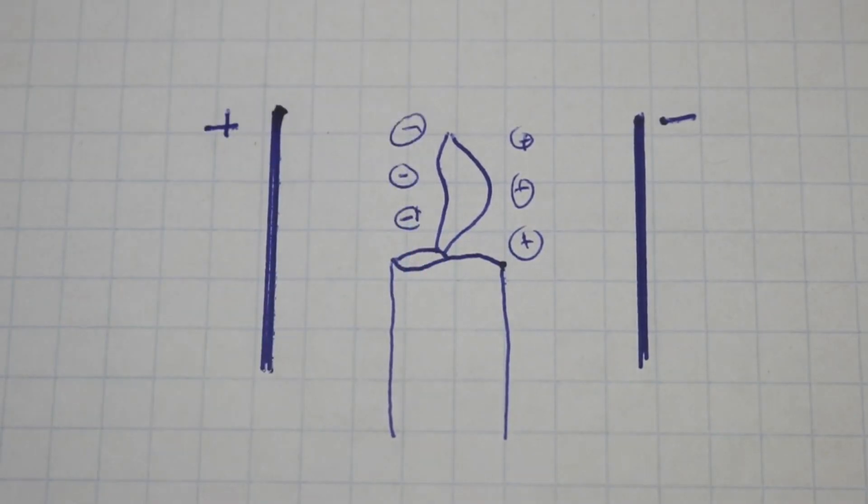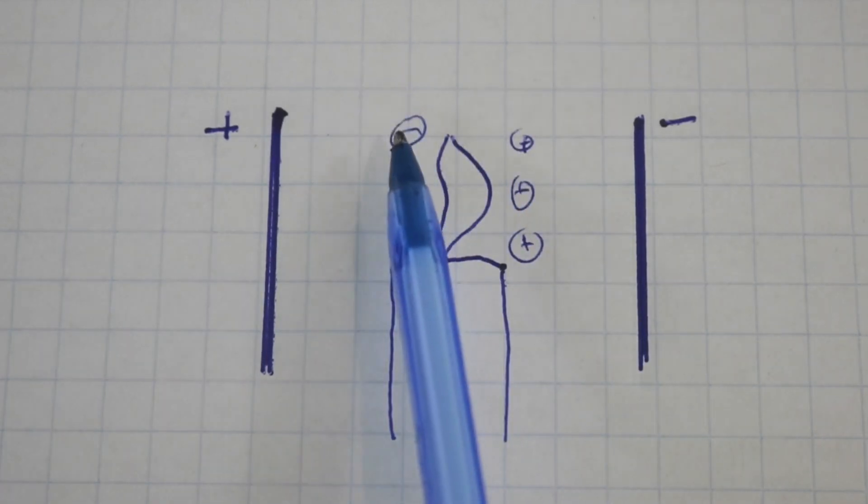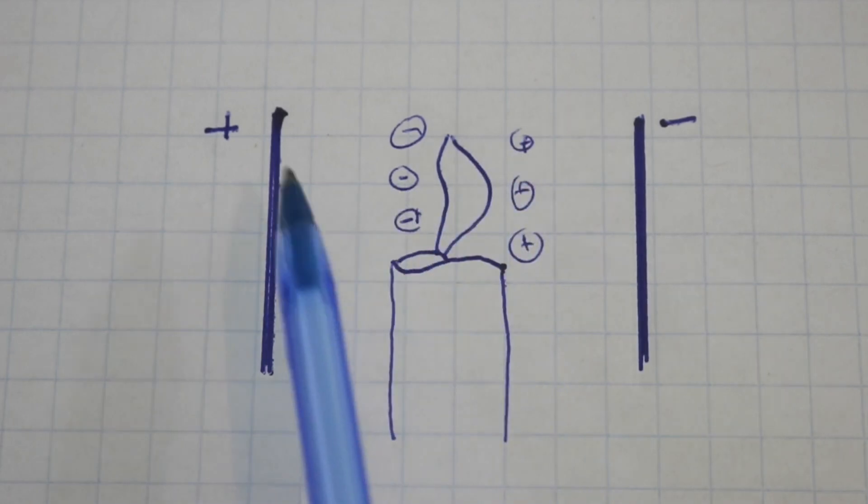So here we have a scheme of the situation. There is the flame and some ions around it, negative ions, positive ions, and we have the two plates, negative and positive.